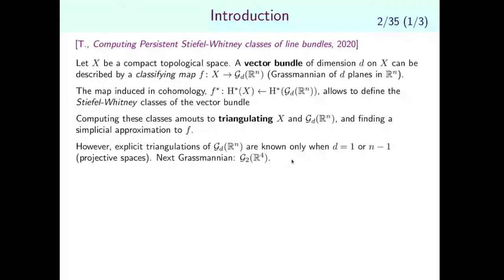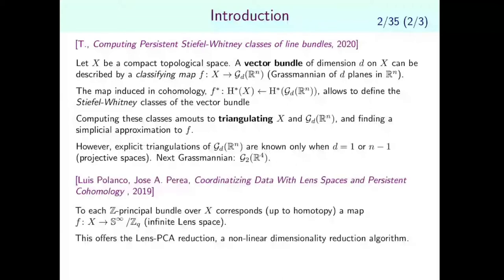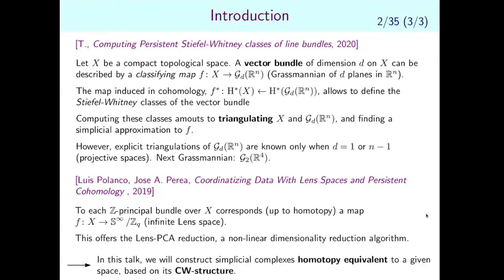The next simplest Grassmannian to study is G2(R4), the Grassmannian of planes in R4. There are several instances in topological data analysis where we are interested in such special manifolds. For instance, the paper of Polanco and Perea uses the fact that a principal bundle over an object space is described by a map from X to some lens space, and uses that to design a dimensionality reduction algorithm.